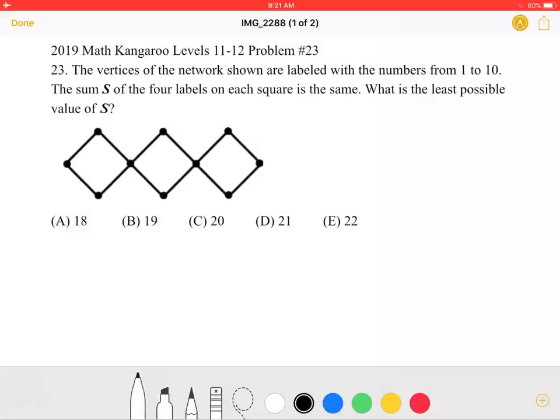The vertices of the network shown are labeled with the numbers from 1 to 10. The sum s of the four labels on each square is the same. What is the least possible value of s?